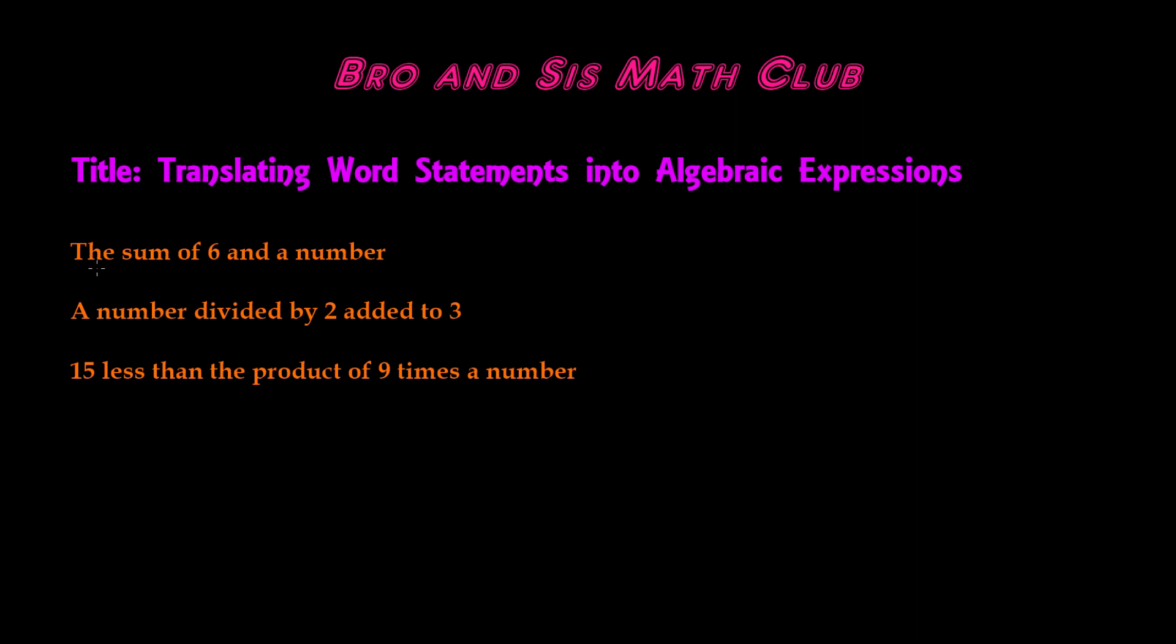The first one says, the sum of six and a number. The keyword 'sum' tells us that we're adding. The two values given to us are six and a number. Since we don't know the value of this number, we can use a variable. Let's say we use the variable x. We're adding six and x, so our algebraic expression will be 6 + x.